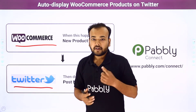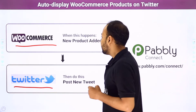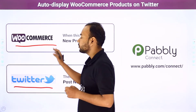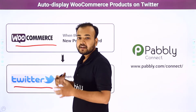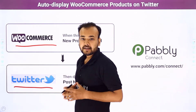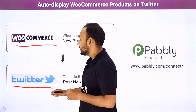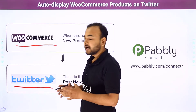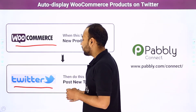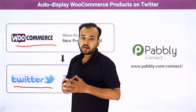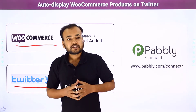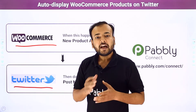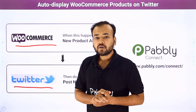Now to get this done, you have two ways. One is whenever you add a new product here on your WooCommerce store, you manually gather the details of the product, then come to Twitter and manually add a tweet for your audience. Now this process can be very repetitive and tiresome, so we have a better way for you.